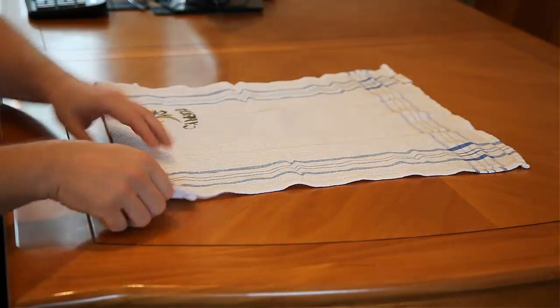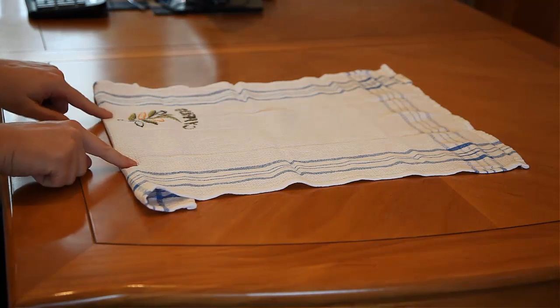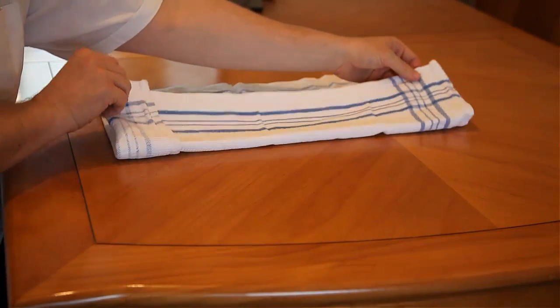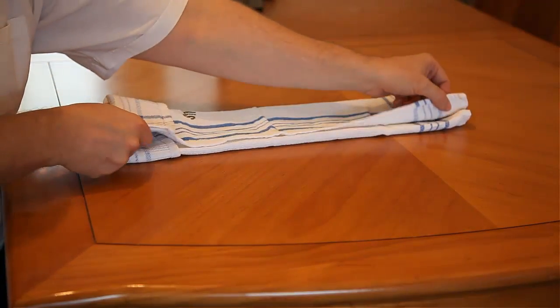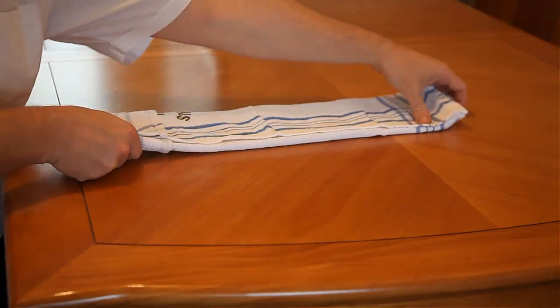Next thing you need to do is fold in thirds. You can use a DVD or a bit of cardboard, or you can just guesstimate it, which is what we're going to do here. Fold over one third like so, fold the other side over one third. You can see the pockets forming here at the back. Turn the whole towel around.